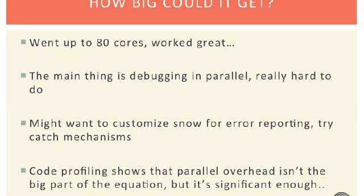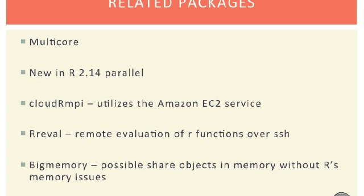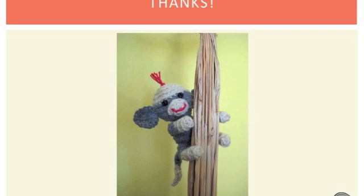We can scale up to about 80 cores — that's how much I've done and it worked great, and I'm sure you can go beyond that. The main problem is debugging in parallel; it's really hard to do. I suggest implementing some custom error reporting with Snow. A couple of packages related to parallel processing are the new parallel package in R 2.14, and you can use CloudR, RMPI, and several other packages to enhance your parallel processing. Thanks for watching — I hope you've enjoyed it and get good use out of this.